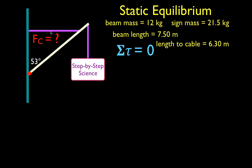What produces torque? Torque is produced by force. So the first thing you should do is draw in all the forces. One of the forces is the force from the cable, another is the force from the weight of the sign, and another is the force from the weight of the beam, drawn right in the middle of the beam at the center of mass. Each force will produce a torque, so now we can sum up the torques.